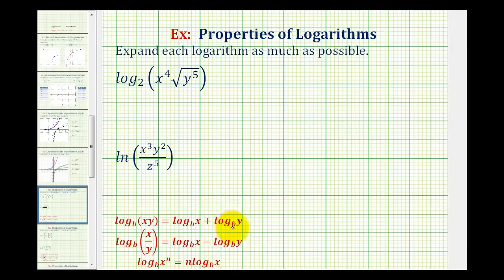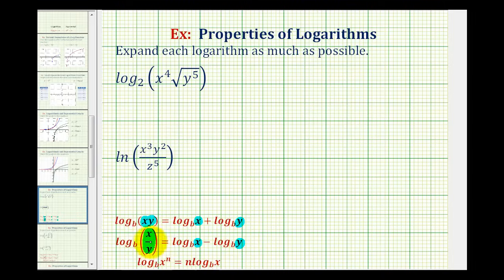For the product property of logarithms, if we have the log of x times y, we can write this as a sum of two logs: log x plus log y. If we're taking the log of a quotient, we can write it as a difference of two logs. So the log of x divided by y is equal to log x minus log y. If we have a quotient, we have a difference of two logs; if we have a product, we have a sum of two logs.